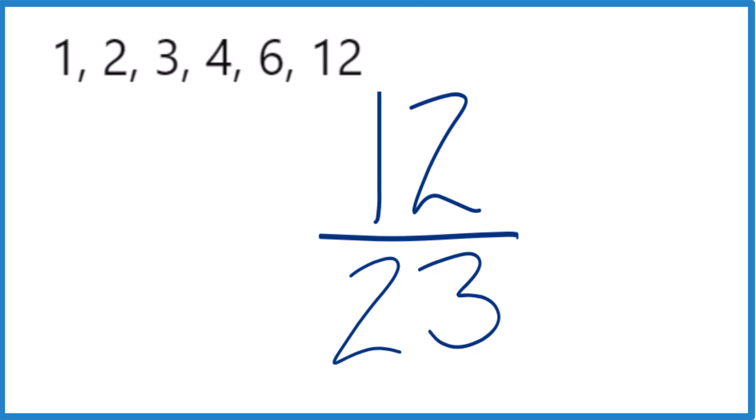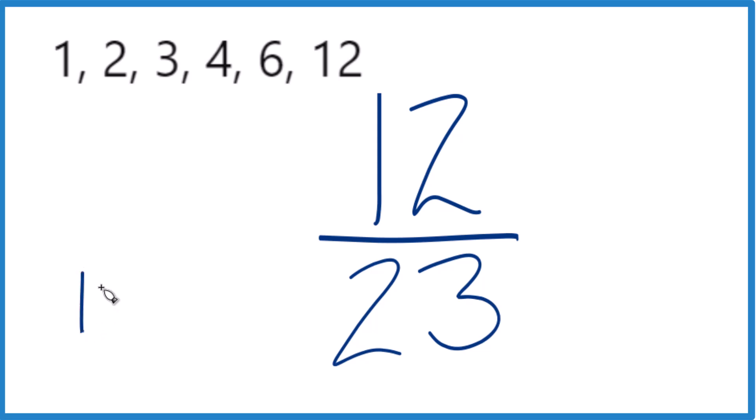They all equal 12. But for 23, the only thing that gives us 23 is 1 times 23. Those are the only factors. So let's find the greatest common factor.